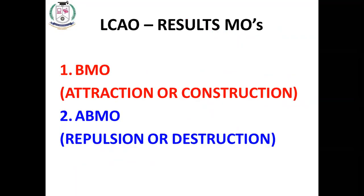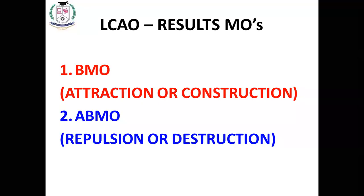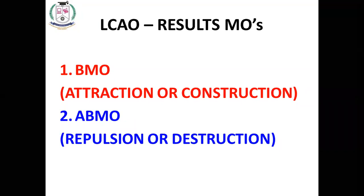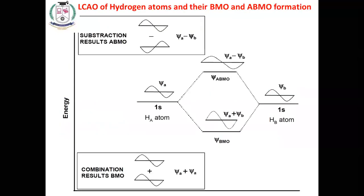LCAO results in two types of molecular orbitals. One is the bonding molecular orbital (BMO), and the second is the anti-bonding molecular orbital (ABMO). The bonding molecular orbital forms due to attraction, combination, or construction. Anti-bonding molecular orbitals form due to repulsion, destruction, or subtraction. Two atomic orbitals combine in two ways: one due to addition and one due to subtraction.